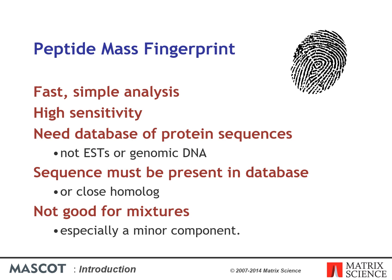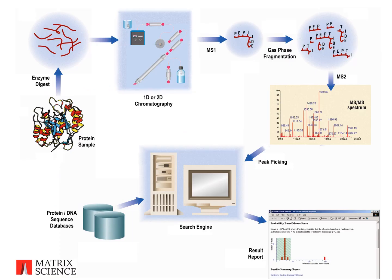To identify proteins from mixtures reliably, you have to work at the peptide level — that is, you have to work with MSMS data. The experimental workflow for database matching of MSMS data is similar to that for peptide mass fingerprinting, but with an added stage of selectivity and fragmentation. Again, we start with a protein, which can now be either a single protein or a complex mixture. We use an enzyme such as trypsin to digest the proteins into peptides, and if it is a complex mixture such as a whole cell lysate, we will probably need one or more stages of chromatography to regulate the flow of peptides into the mass spectrometer.